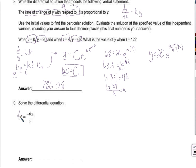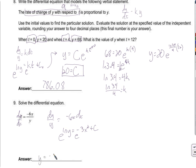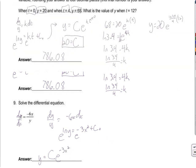Solve this differential equation. Writing it as dy/dx, I get dy over y equals negative 6x dx. The natural log of y equals negative 3x squared plus C. Exponentiating both sides gives y equals C times e to the negative 3x squared. That's the general solution.